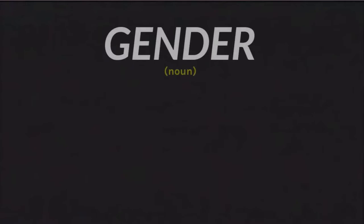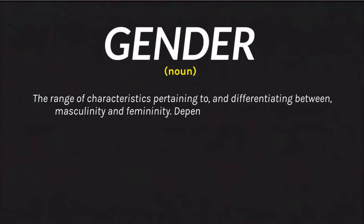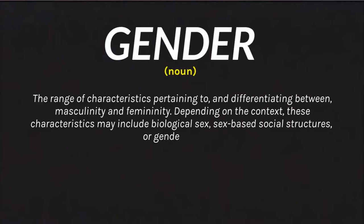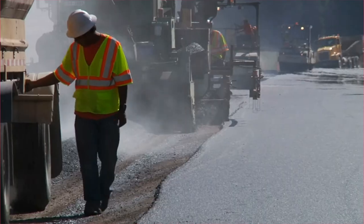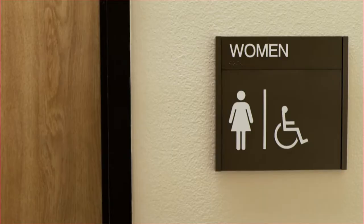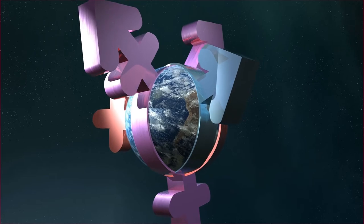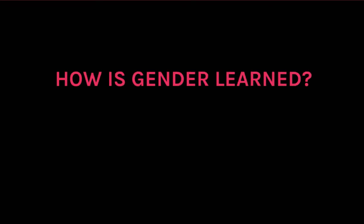Gender — a social construct that has permeated human culture for millions of years. Gender has been conditioned to dictate what we wear, what we look like, what jobs we have, who we socialize with, where we go to the bathroom — the list goes on. Gender is clearly a significant part of life as a human being. But how is gender learned, and when does it start?